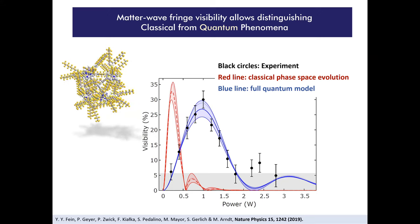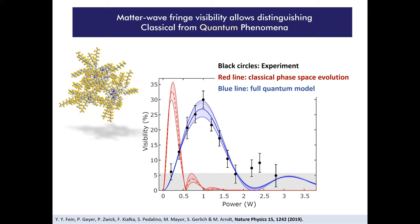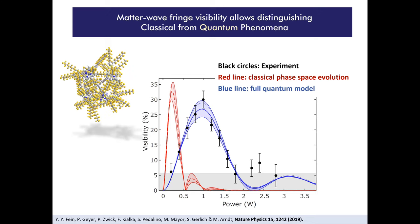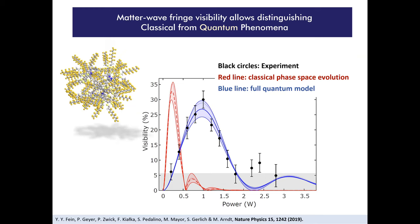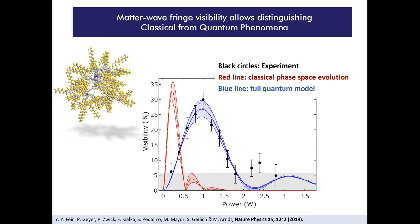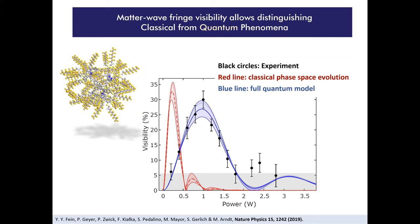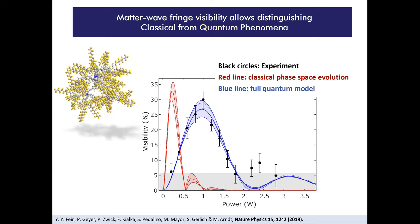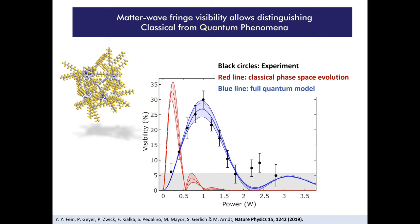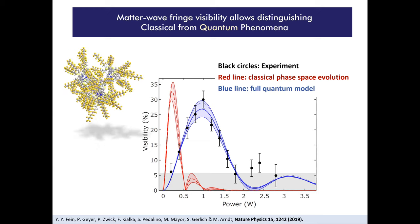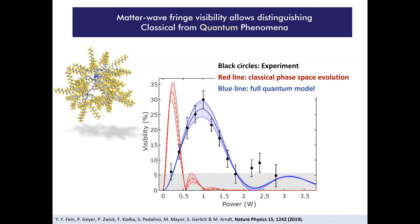Where we can vary the interaction between the molecule and the laser light by changing the laser power. We change the phase shift the laser imprints on the molecule while it's flying as a delocalized object, as a delocalized wave through several of these nodes and antinodes of the laser wave. And that modulates the fringe visibility at the end. And we can compute that very accurately and we can compare it with the experiment. And the black circles are the experiment, the blue line, the quantum model within the confidence interval. And the red line is the classical phase space evolution. And you can see it's clearly non-classical, far beyond the red curve, and it's well described by quantum mechanics.